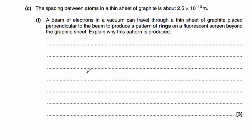Part C describes how a beam of electrons can travel through a thin sheet of graphite placed perpendicular to the beam to produce a pattern of rings on a fluorescent screen. We need to explain why this pattern is produced. The spacing between the atoms is around 2.5 times 10 to the power of minus 10.